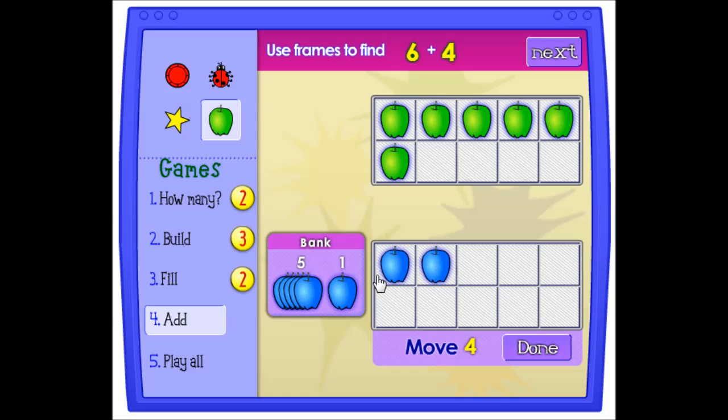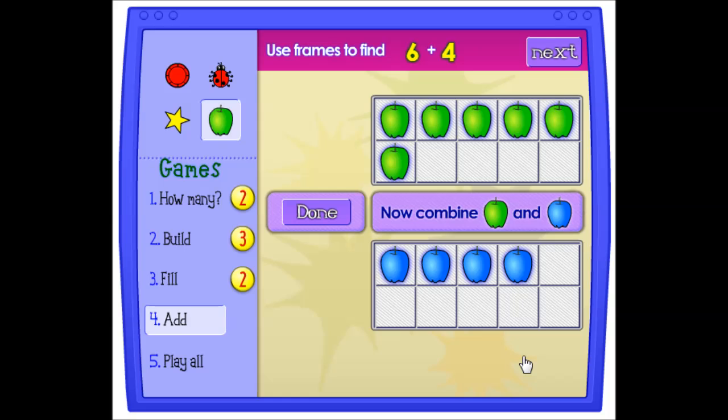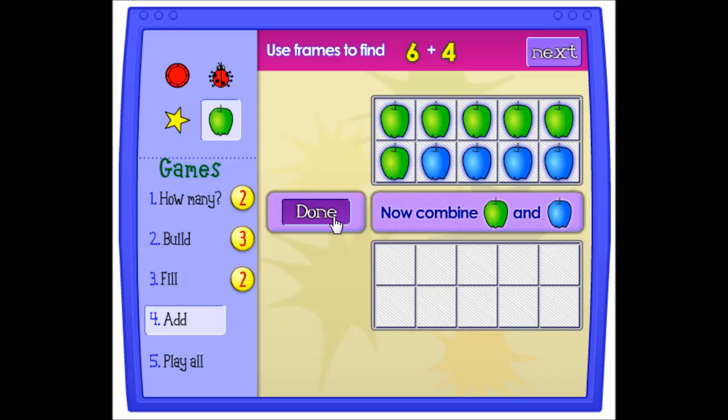So you could individually drag four in. You could also put in five and take away one. We'll show that later. Now combine the apples. You need to drag the apples that will complete the frame on top, and that turns out to be all of them. Done.